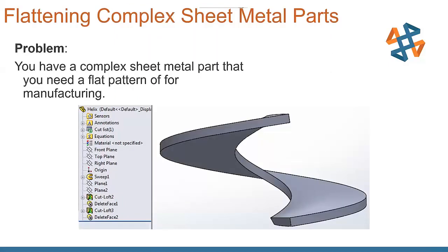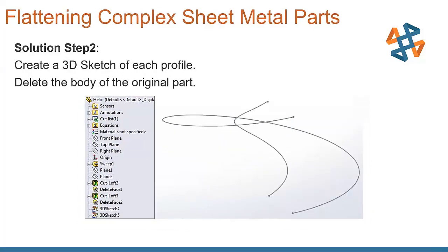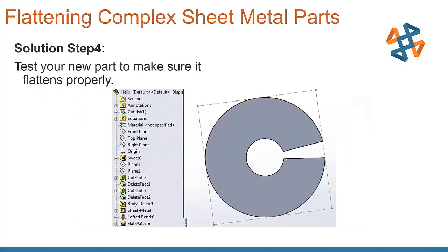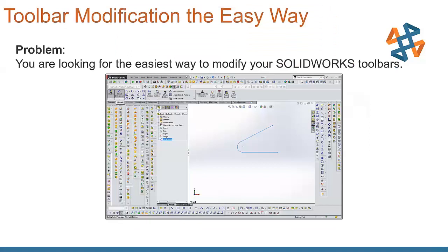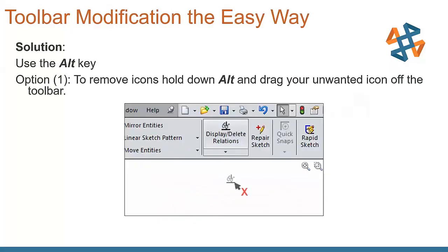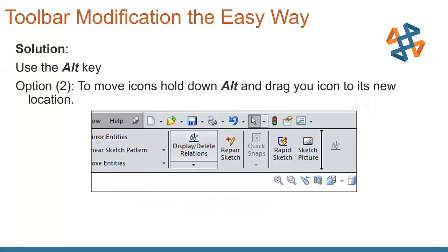A couple other items that are out here. I'm just going to kind of skip through and move on towards the end here. We have ability to come in here, flattening out complex sheet metal parts, utilizing some 3D sketches to be able to do that. Looking at ways to do easy toolbar modification. You've got all these different toolbars inside SolidWorks. How do we clean them up and customize it? Alt key is one great option that we can use to remove or move items from one to the other. A pretty neat way of being able to do that.